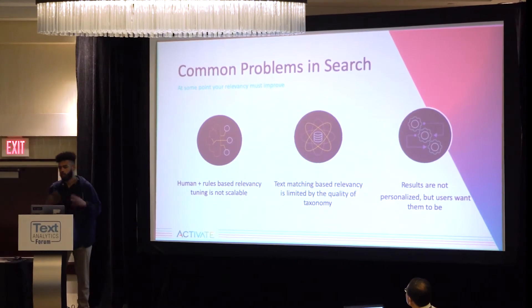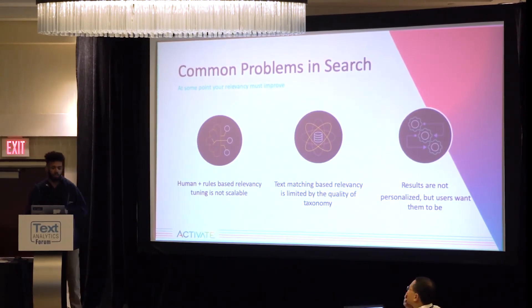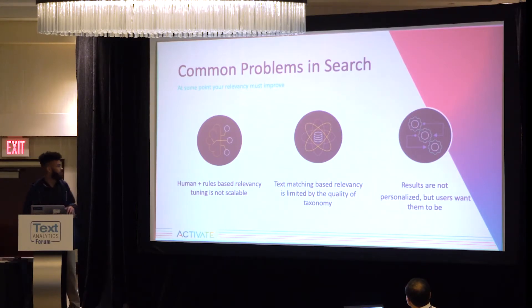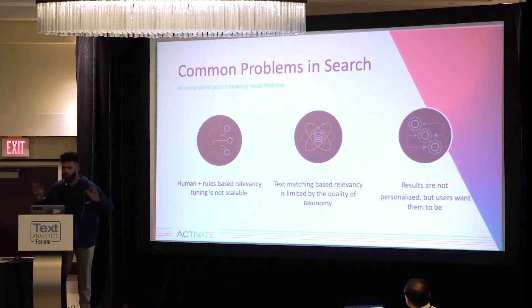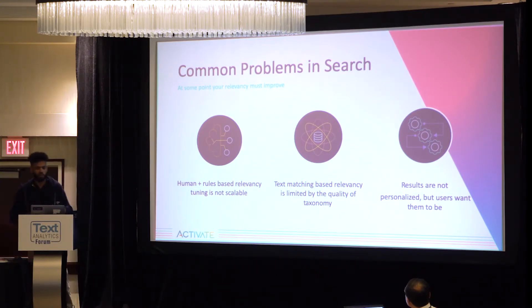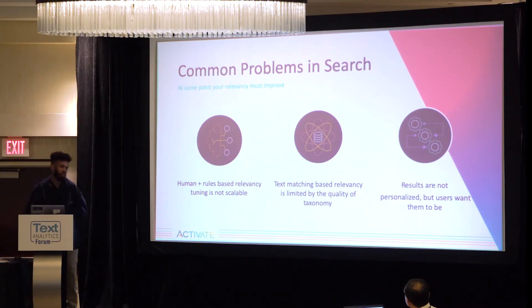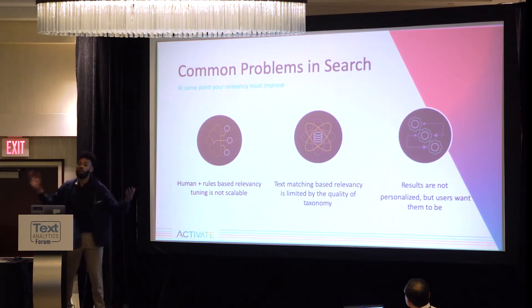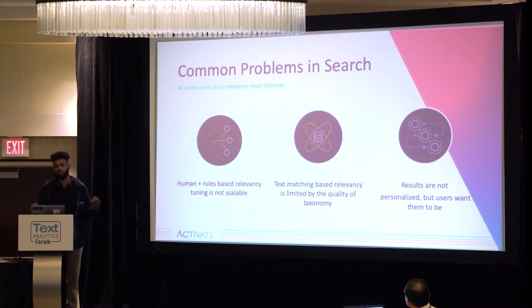There are three common problems in search, and we're always trying to improve relevancy. But with rules — and there's a lot of talk about rules here — it's not a scalable approach. You need human intervention. What about at three in the morning, or if you're trying to run a global team? It's very difficult. Text-based matching has always fallen short and will always continue to fall short because text-based matching is only as good as the quality of text.